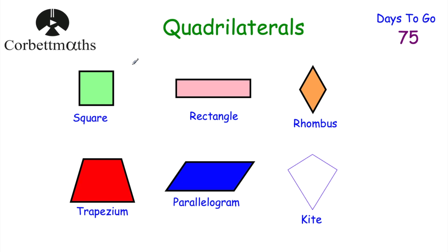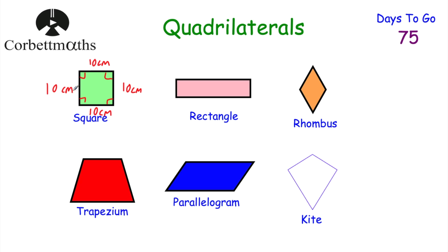Now let's look at quadrilaterals. A square has four right angles and all four sides the same length — for instance, all 10 centimetres. It has four lines of symmetry: vertical, horizontal, and the two diagonals. It also has rotational symmetry of order four.